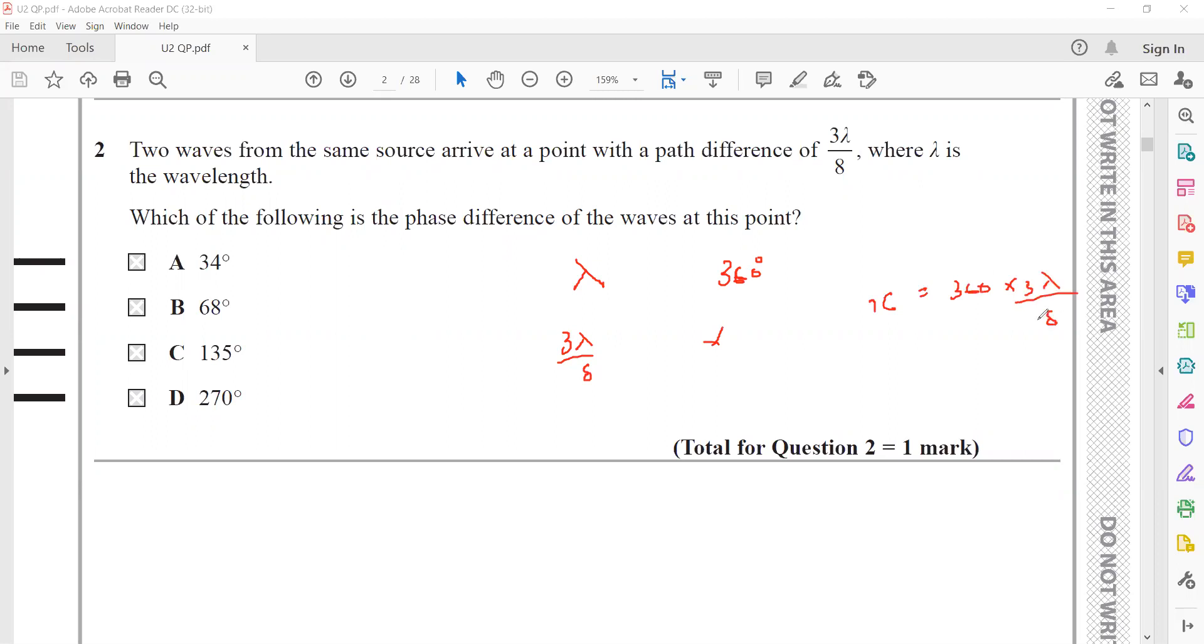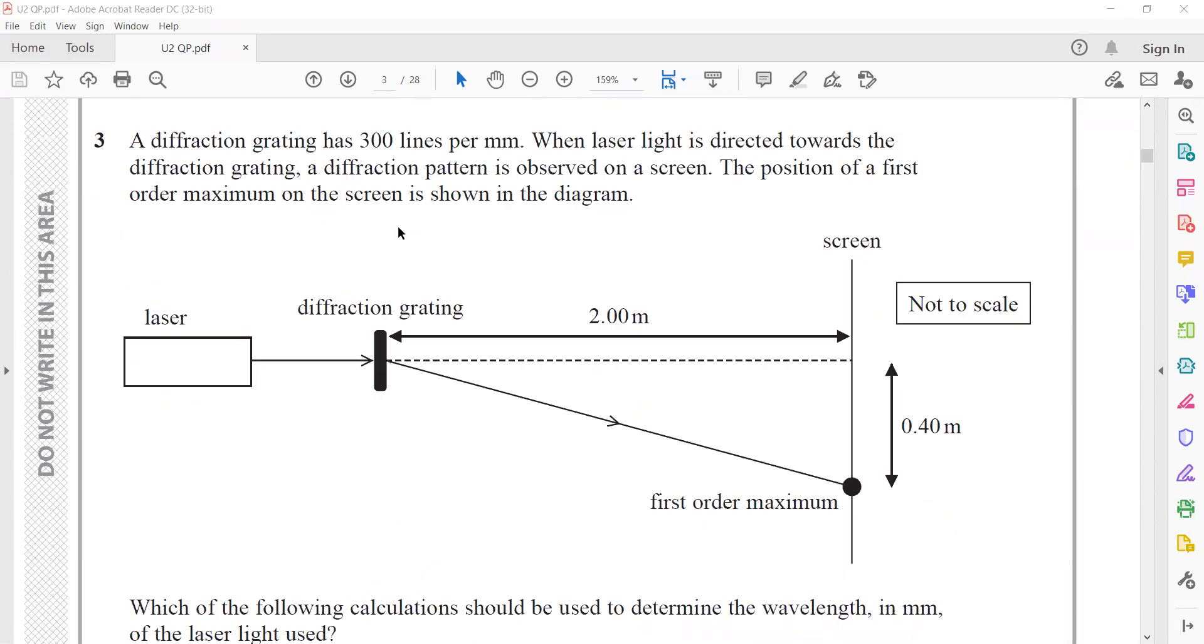But if we have 3 lambda by 8, then this will be x. So x will be equal to 360 multiplied by 3 lambda divided by 8. When we simplify this, it will come out as 135 degrees. We can work out using this path difference to get the phase difference, which is 135 degrees in this case.